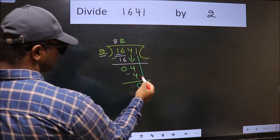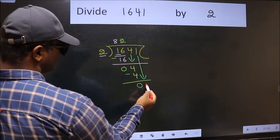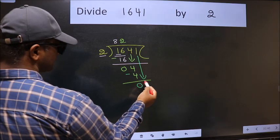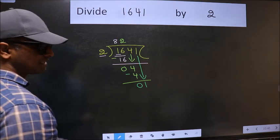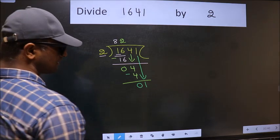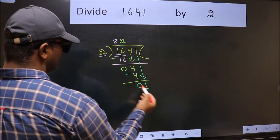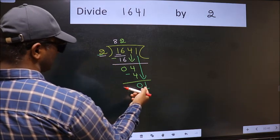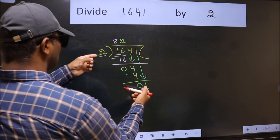After this, bring down the beside number. So 1 down. After this step, the mistake happens. And the mistake is this: here we have 1 and here 2. 1 is smaller than 2.